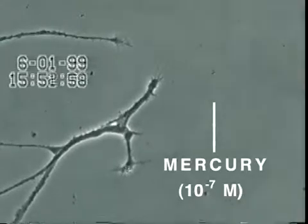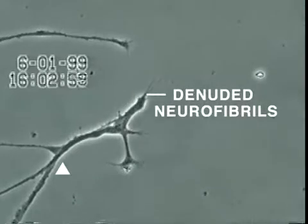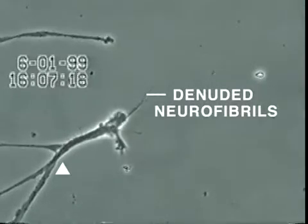Over the next 30 minutes, the neurite membrane underwent rapid degeneration, leaving behind the denuded neurofibrils seen here.